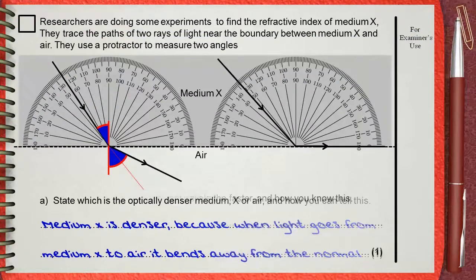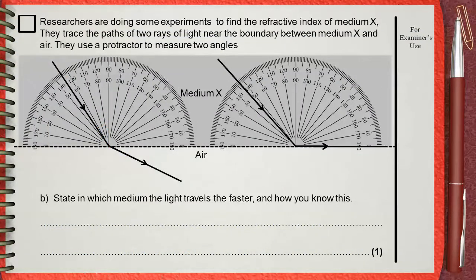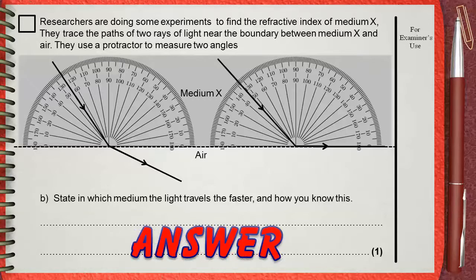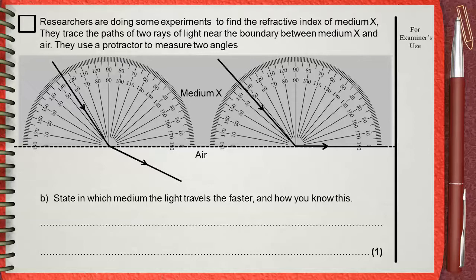Question B: State in which medium the light travels the faster and how you know this. This question is easy to answer. Of course the light will be faster in air because light travels faster in the less dense medium. This is a fact.